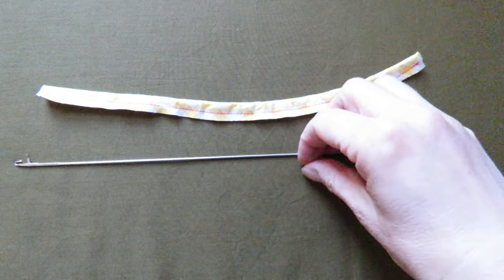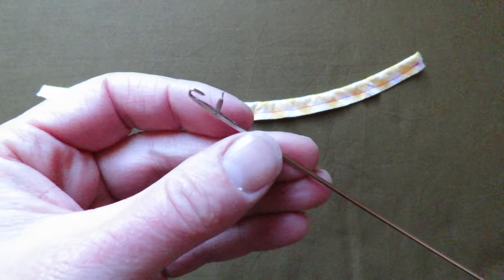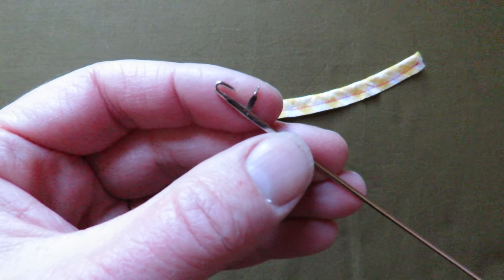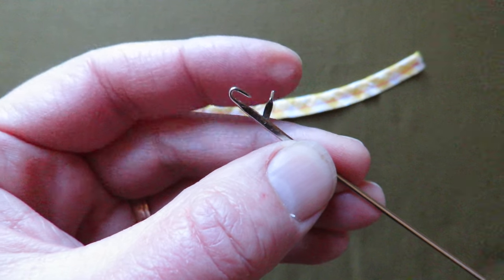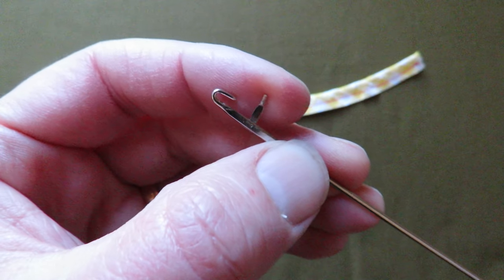Here's how to use a loop turner. You can see the end of a loop turner is like a little latch hook. There's a hook and then there's a movable arm like this.